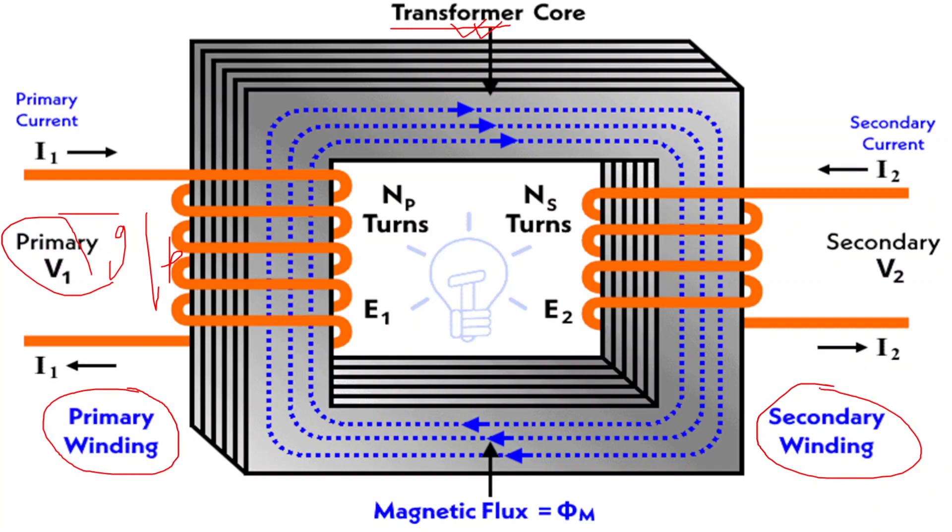In the primary, the voltage source is connected, but in the secondary side, the load is connected. The changing magnetic field in the primary coil in the core of the transformer induces a voltage in the secondary coil.